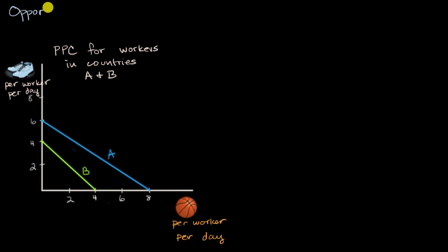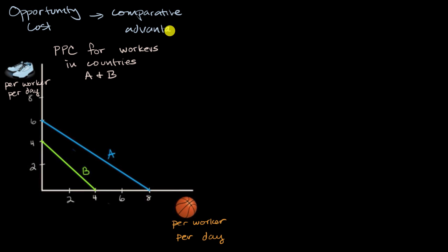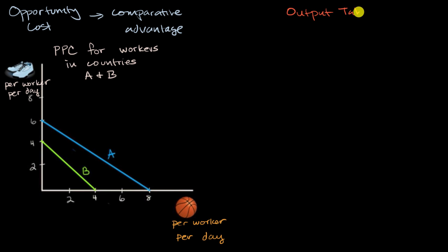What we're going to do in this video is draw a connection between the idea of opportunity cost of producing a good in a certain country and comparative advantage between countries. We have a chart that shows the production possibility curves for two different countries. This is an oversimplified model, but it helps us get some insights, where in each country workers can only produce some combination of sneakers and basketballs. We'll also present this as an output table, and from either the production possibility curves or the output table, we can calculate the opportunity cost of shoes and basketballs, and then deduce things about comparative advantage.